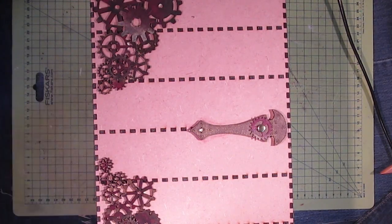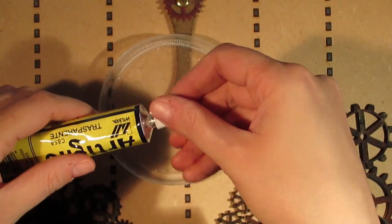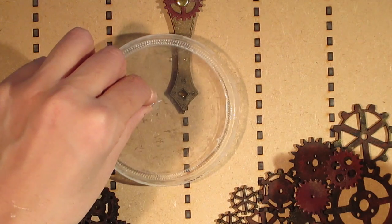And I will decorate the other side in the opposite way. Using mastic, I will also glue some screw heads in the center of the gears.